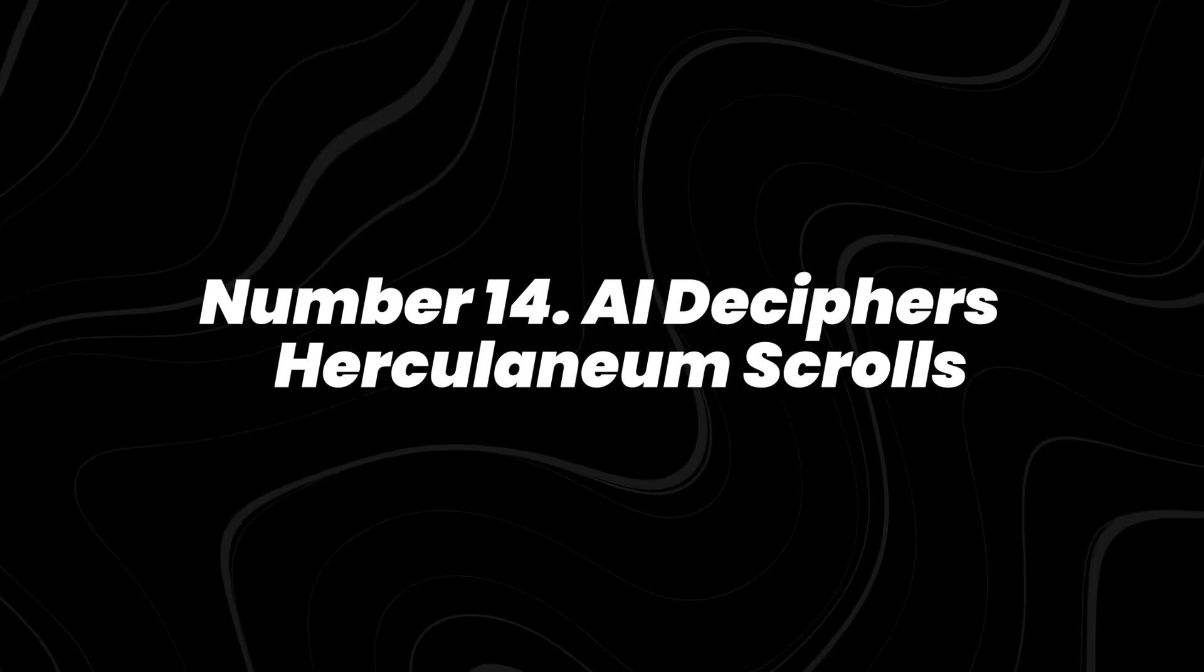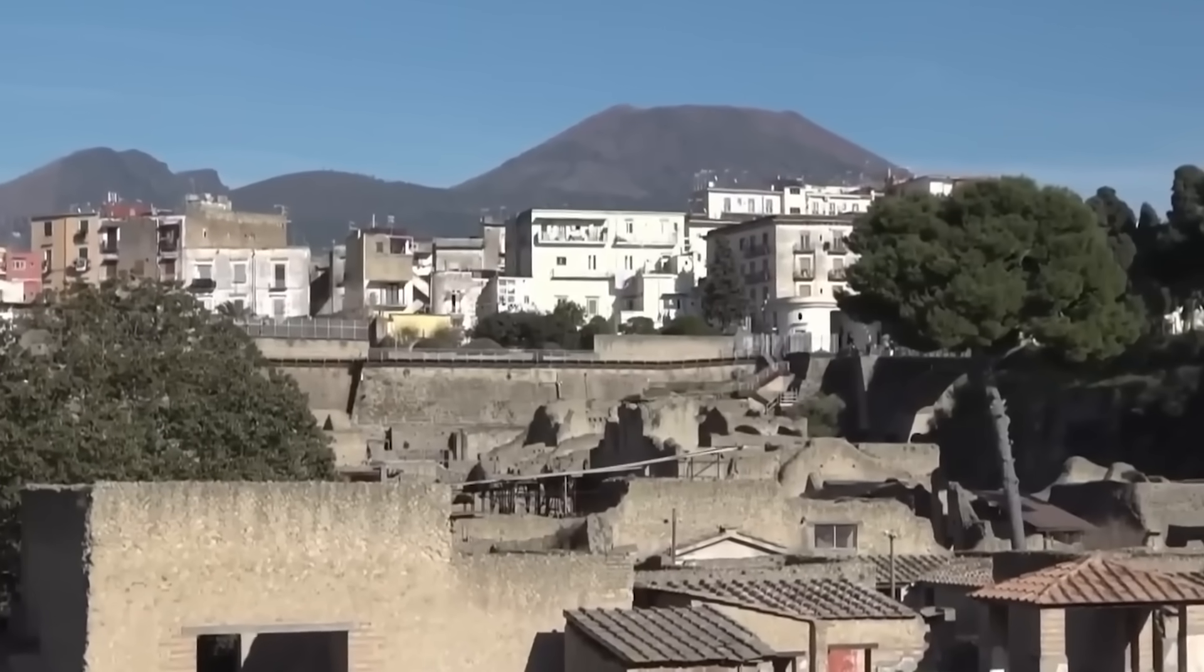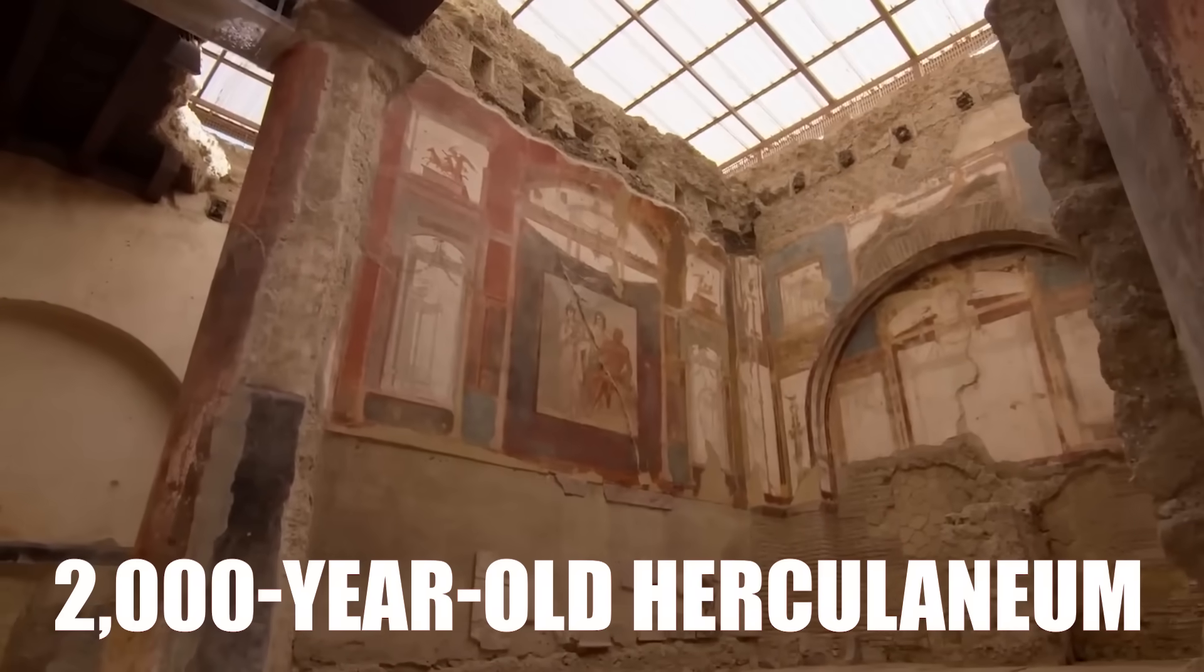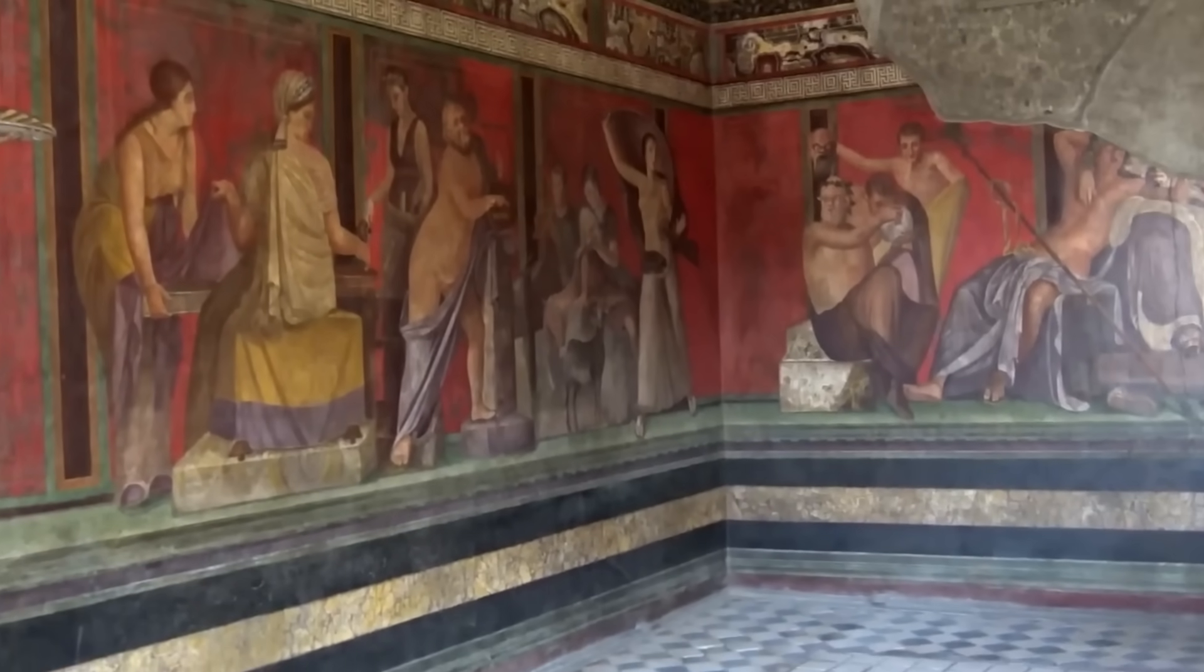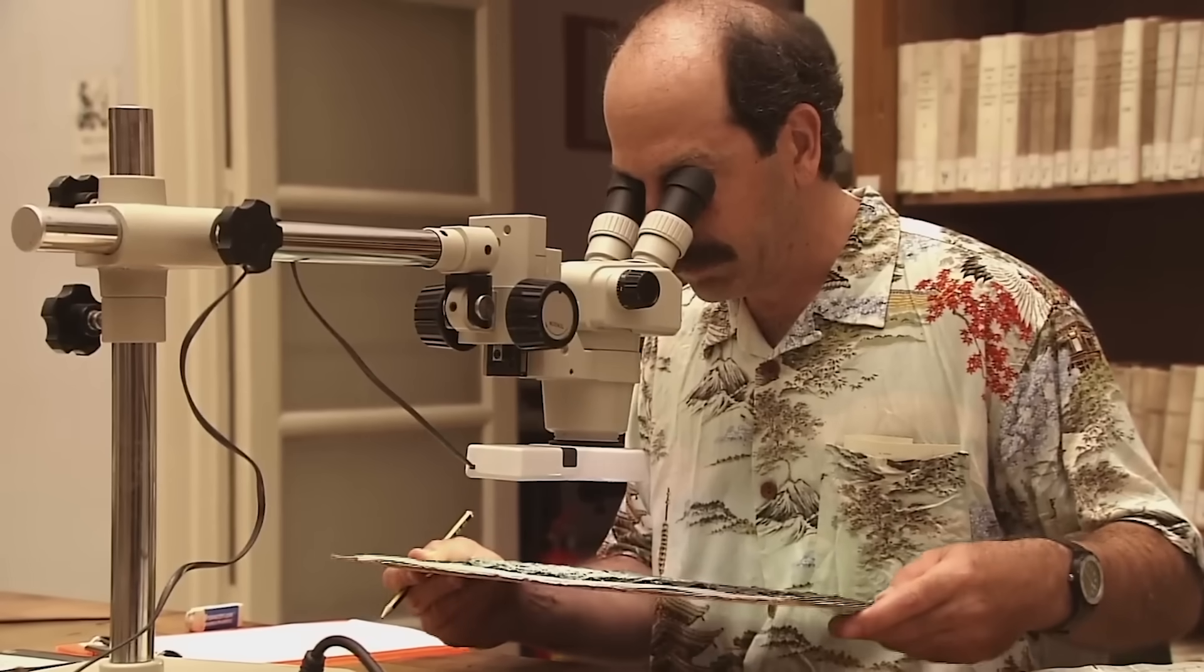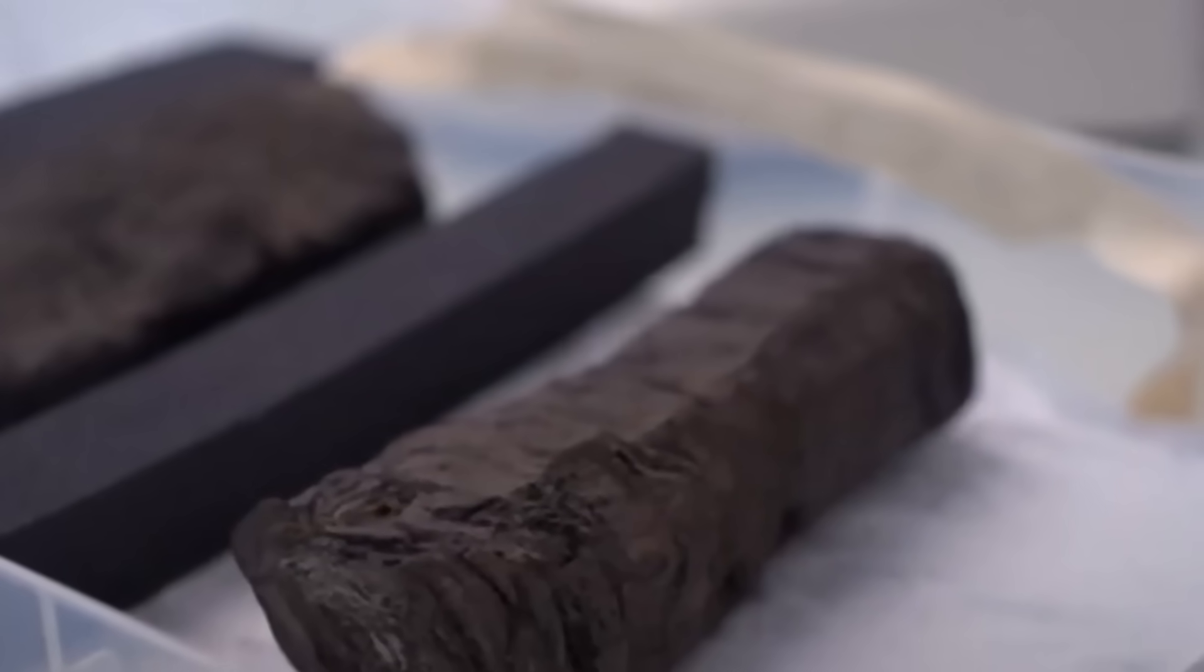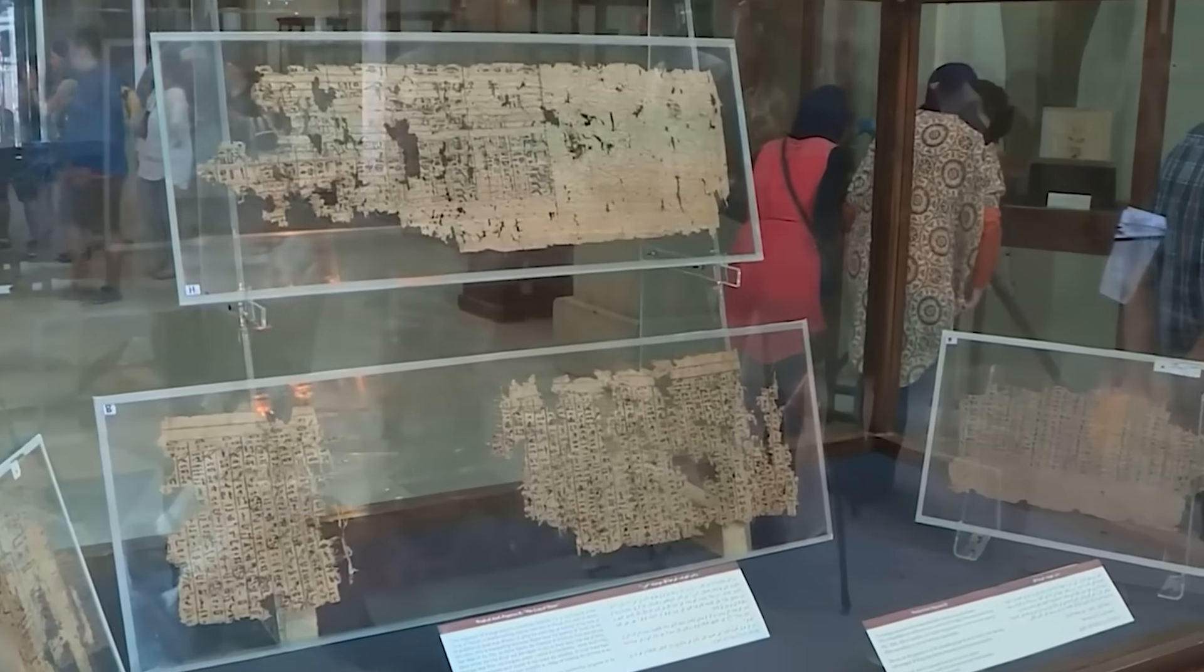Number 14, AI deciphers Herculaneum scrolls. In 2024, AI helped decode words hidden inside 2,000-year-old Herculaneum scrolls carbonized by Mount Vesuvius. The project, known as the Vesuvius Challenge, used 3D CT scans and machine learning to identify faint ink traces buried in the carbon layers. The first deciphered text revealed Greek philosophical writings unseen since ancient Rome.